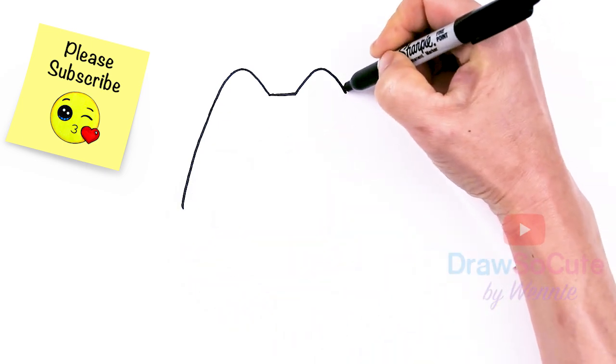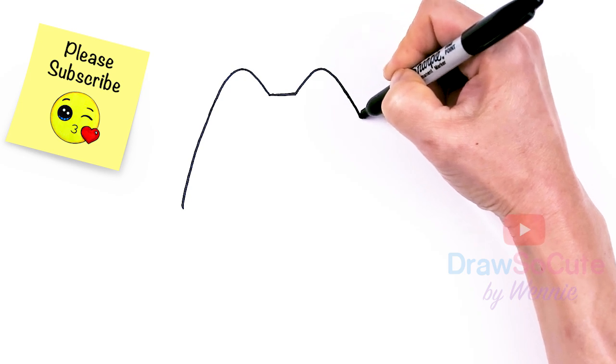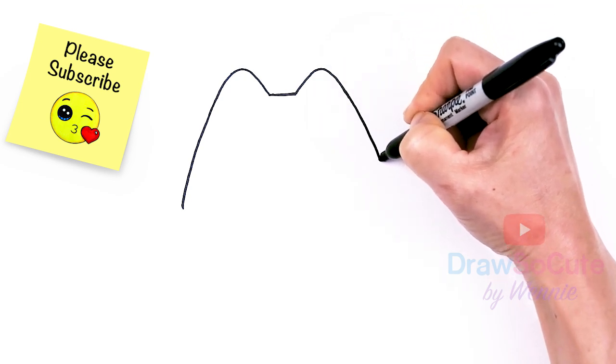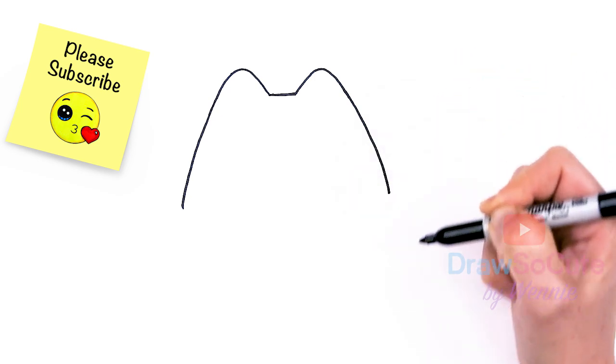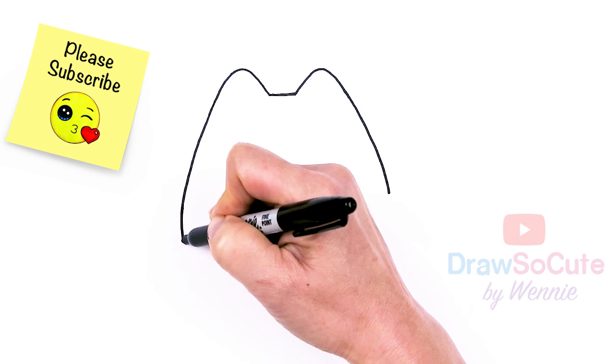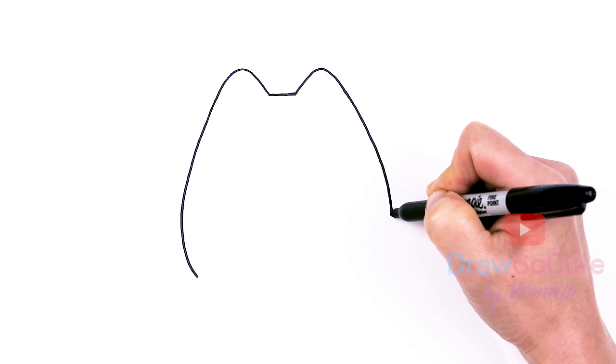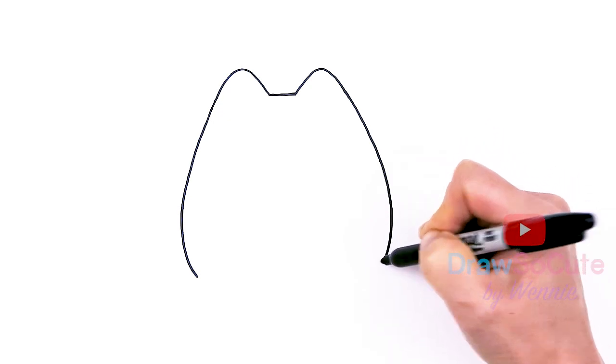And same thing here. So this side, maybe a little bit more out. More curved, I guess you would say. And then let's bring this down. But I guess it really doesn't matter. And right here, just want to get Pusheen's body shape in.